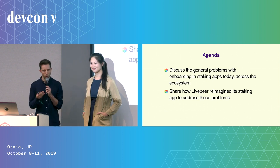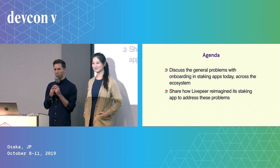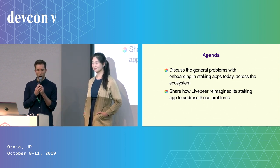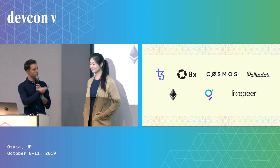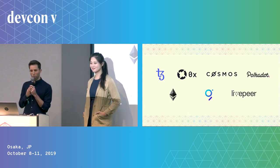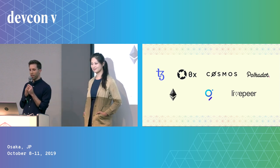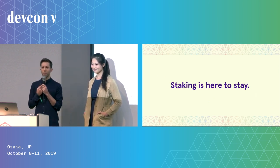In the case of Livepeer, that's a video infrastructure network. But there are lots of really exciting proof-of-stake networks being built today that we think will be integral to our everyday lives as citizens of the internet. Here's just a short list — the tip of the iceberg. There are public proof-of-stake networks for smart contract platforms, for value exchange, for data query processing, for blockchain interoperability. We think staking is here to stay.